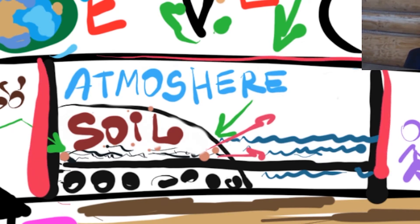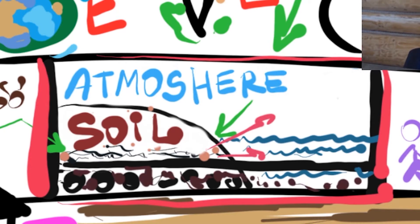lithosphere, atmosphere, hydrosphere. The soil is a living layer on the border between the subsoil, air and water.